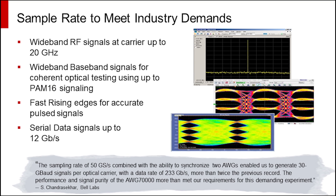With a 50 gigasamples per second sample rate, which is four times faster than any other AWG, you can not only test today's high-speed communication standards but also start working toward faster standards that are not yet fully developed.